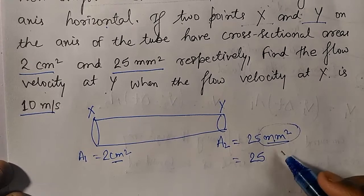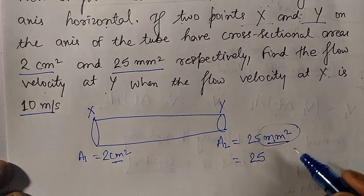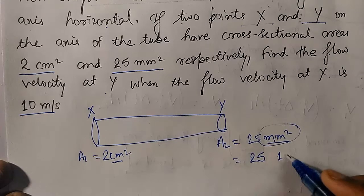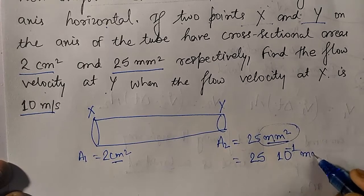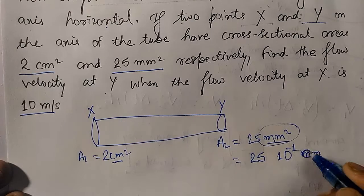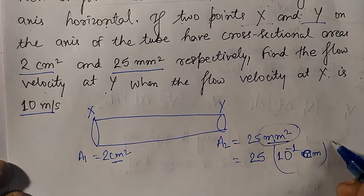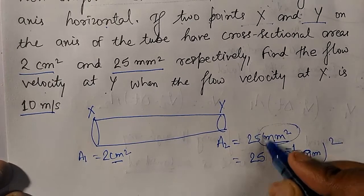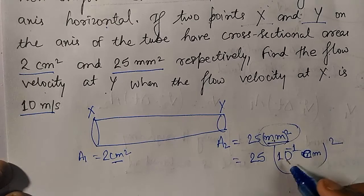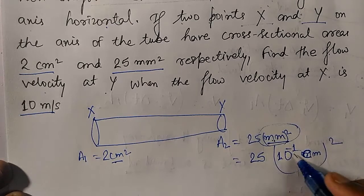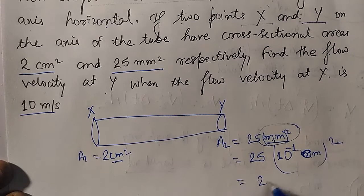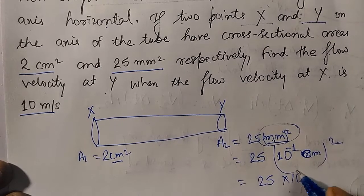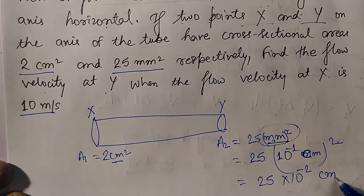25 mm² — to convert millimeter to centimeter, we multiply by 10 to the power minus 1. So millimeter squared becomes 10 to the power minus 2 centimeter square. Therefore 25 mm² equals 25 × 10⁻² cm².